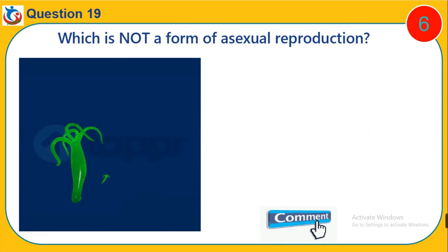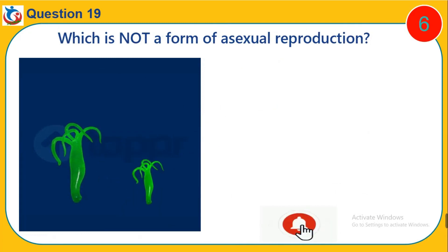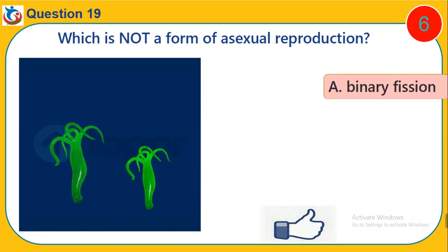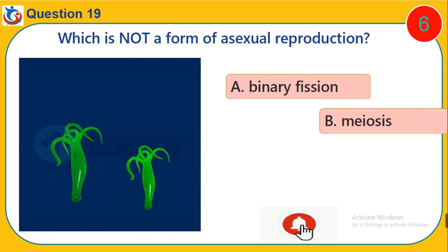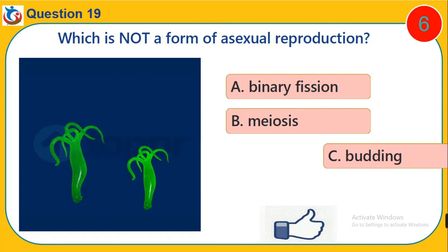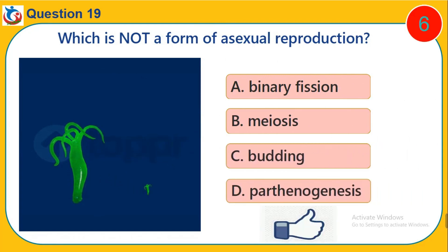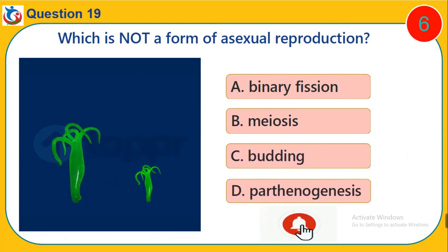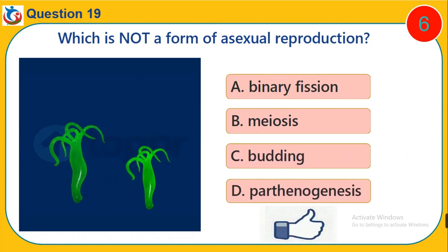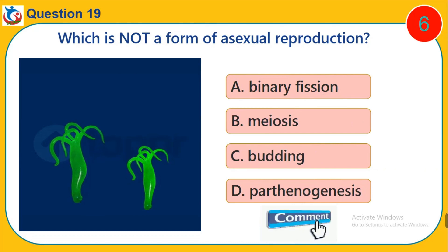Question 19. Which is not a form of asexual reproduction? A. Binary fission. B. Meiosis. C. Budding. D. Parthenogenesis.